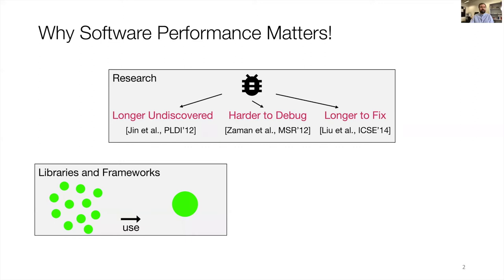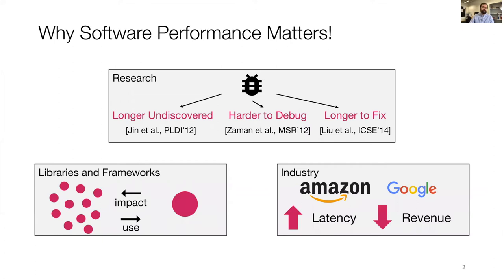And if you think about libraries and frameworks, especially in the open source world, where multiple clients use one particular library or framework and rely on it — if we introduce a performance problem into that library or framework, it can have a drastic impact on its clients. And finally, industry in the form of Amazon and Google has reported that an increase in latency in their services can result in a drastic drop in revenue.